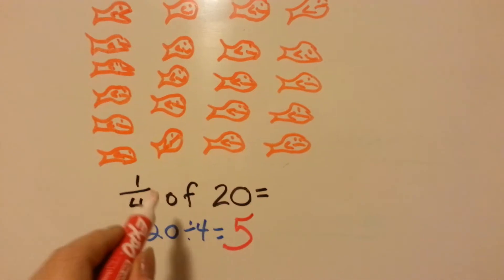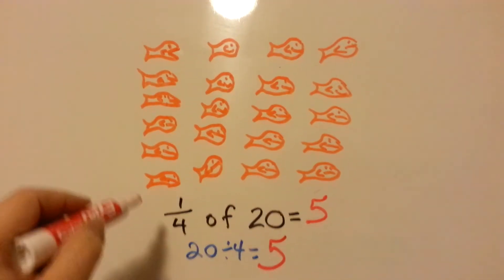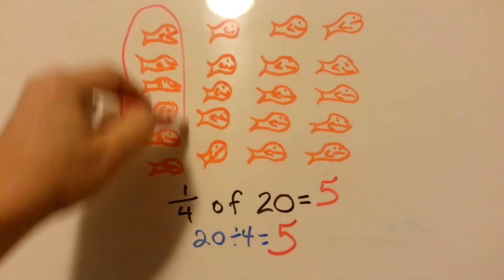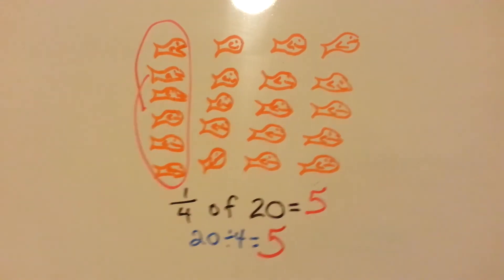So 1 fourth of 20 is 5, and we'll circle 5 goldfish. That'll be 1 fourth of 20.